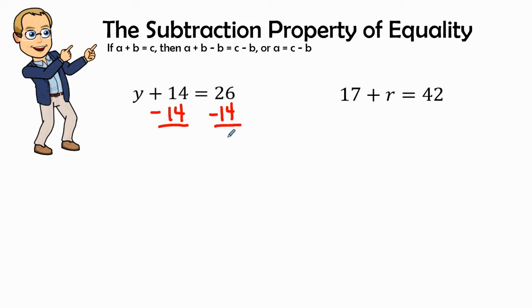This maintains the integrity of the equal sign, so therefore, positive 14 plus a negative 14 gives me zero. I'm going to bring down my variable y, and then I'm going to subtract 26 minus 14. Therefore, 26 minus 14 is 12.